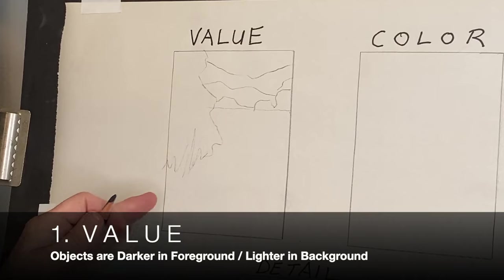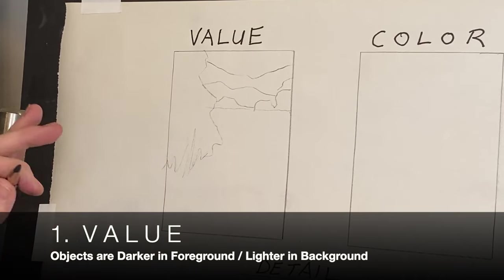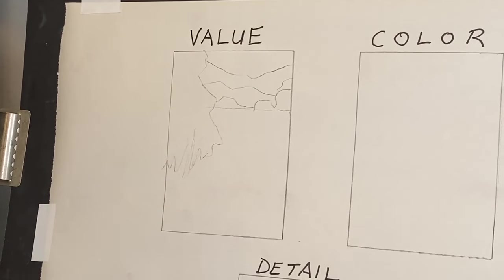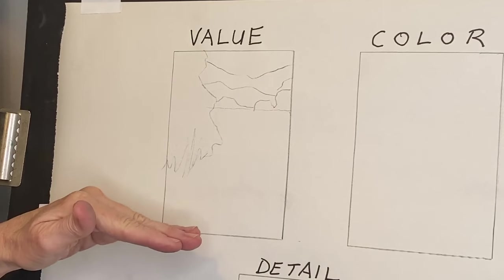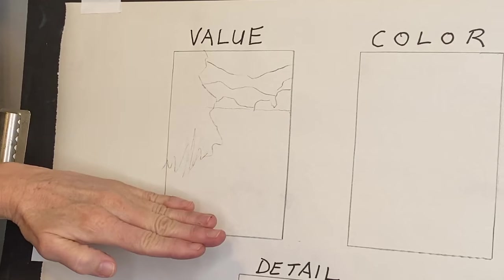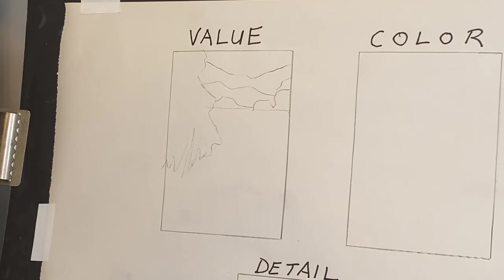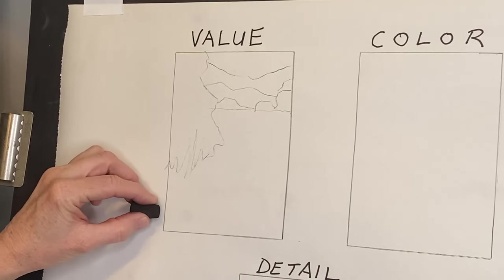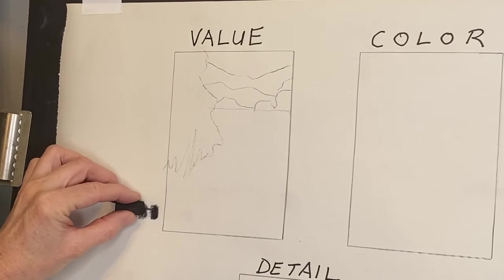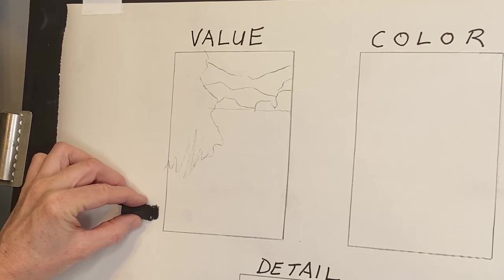With this simplified landscape, let's talk about value. Value is the difference between light and dark. The rule of value is that value is typically darker in the foreground and gets lighter in the background. I'm going to use some color totally void of hue — this is just literally black to white.